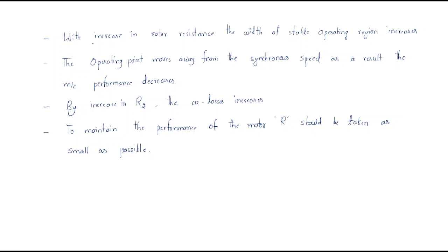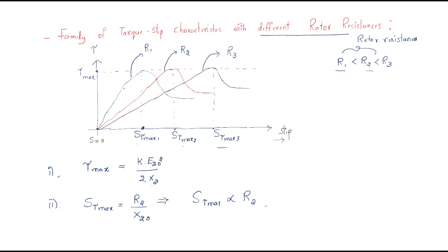With increase in rotor resistance, the width of the stable operating region increases. For the first curve with R1, the stable operating region is a certain range. For R2, the stable operating region increases. For R3, it increases further. The stable operating region for R1 extends from one point to another; for R2 it is a wider range.